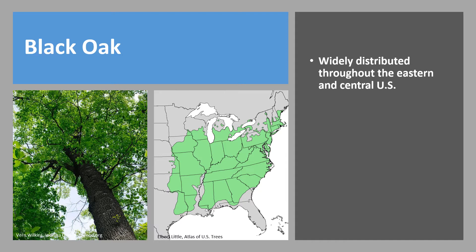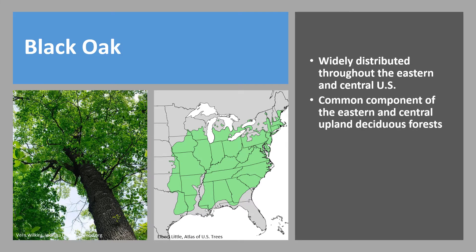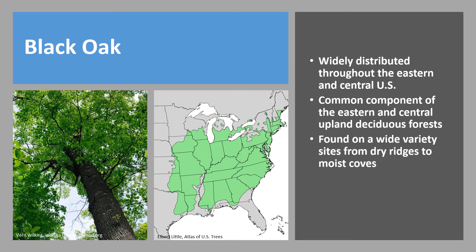Black oak is widely distributed throughout the eastern and central United States. It is a common component of the eastern and central upland deciduous forest, but also occurs in savannas in that transition zone between the eastern deciduous forest and the western prairies. Black oak is found on a wide variety of sites, from dry ridges to moist coves, with best growth on moist, rich, well-drained soils. However, it tends to be more abundant in the drier soils of the south and west upper slopes and ridges.